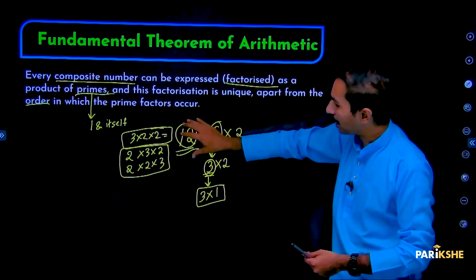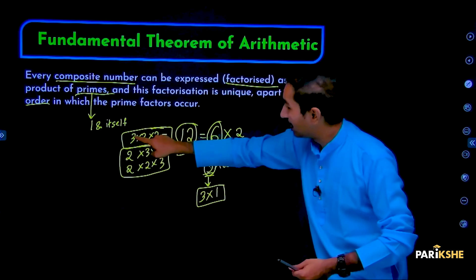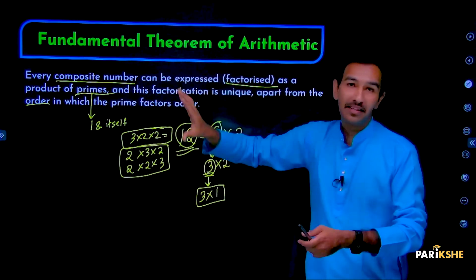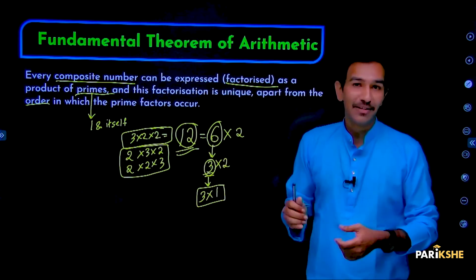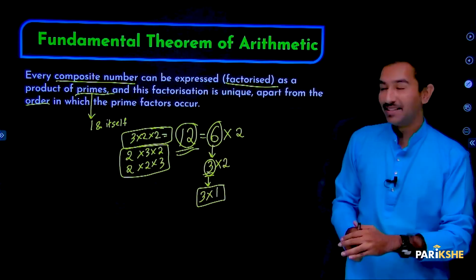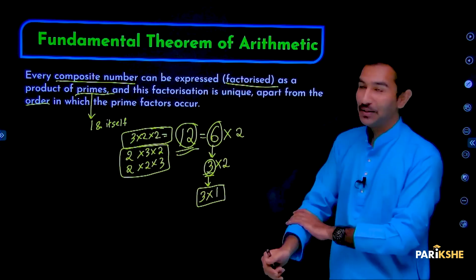Every composite number can be expressed as a product of primes, where the order does not matter. This is called the Fundamental Theorem of Arithmetic. So now you understand what composite numbers are and what prime numbers are. The Fundamental Theorem of Arithmetic is very important.